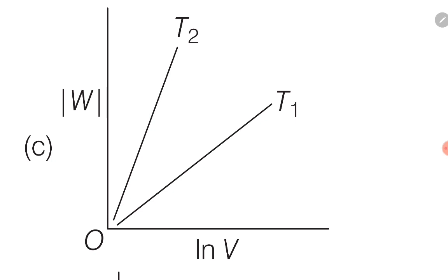The correct graphical representation has work done (|W|) on the y-axis and ln(V) on the x-axis. Since |W| = nRT ln(V2/V1), the graph is a straight line going upwards with slope nRT. Because T2 > T1, the value of nRT2 > nRT1, so the slope of the T2 graph is greater than that of T1. Therefore, the T2 line is steeper than T1 in the graph.